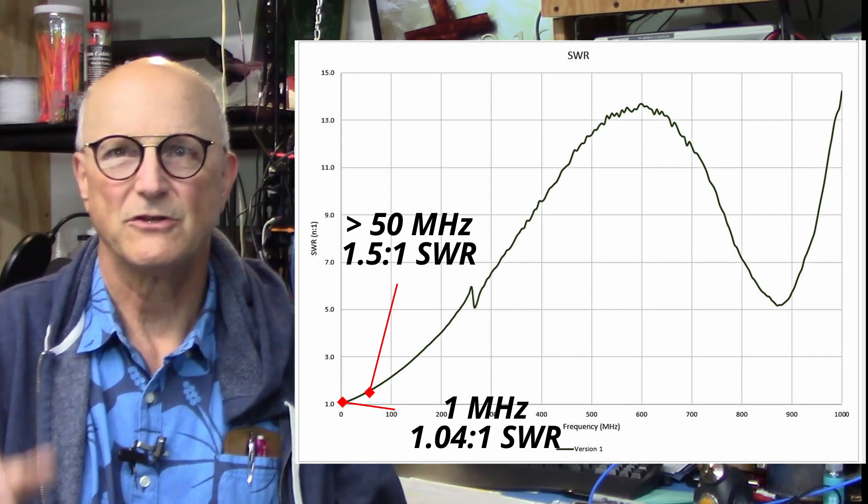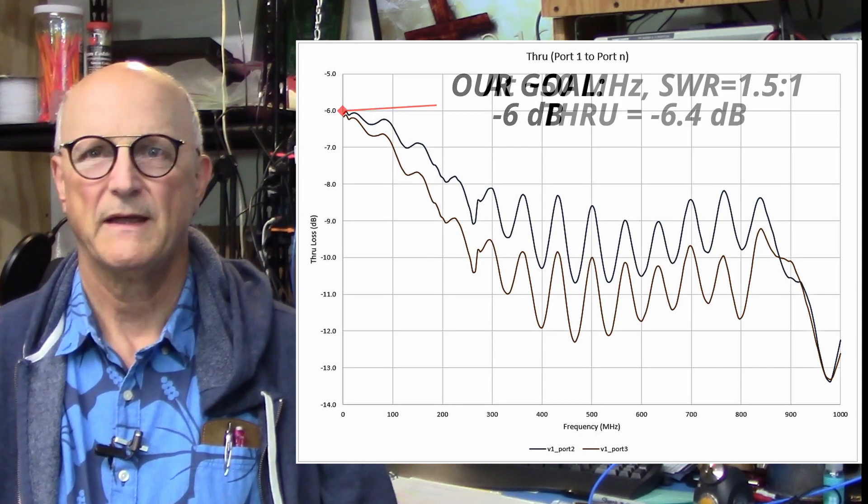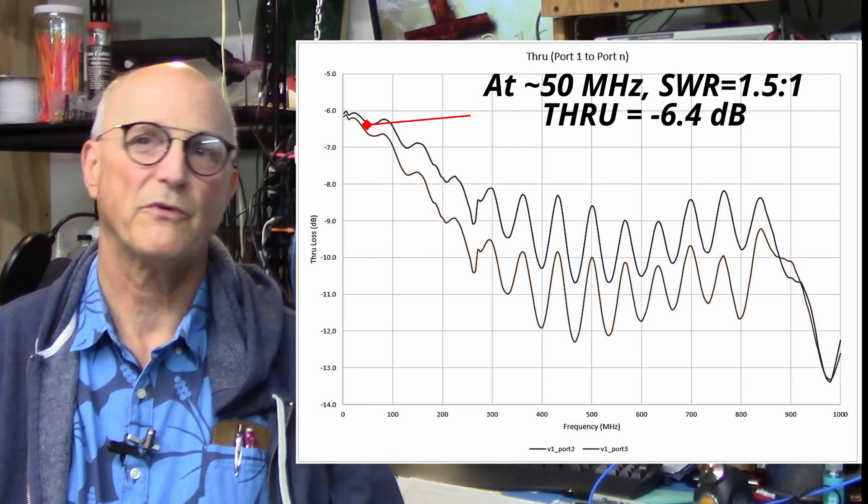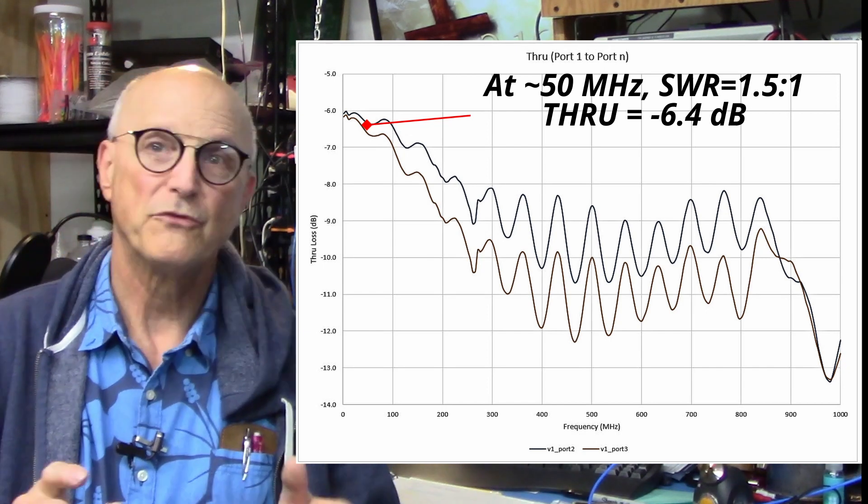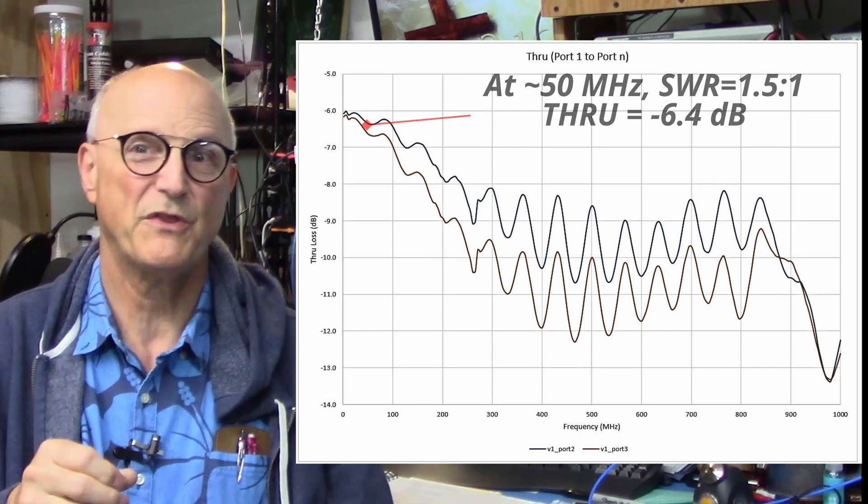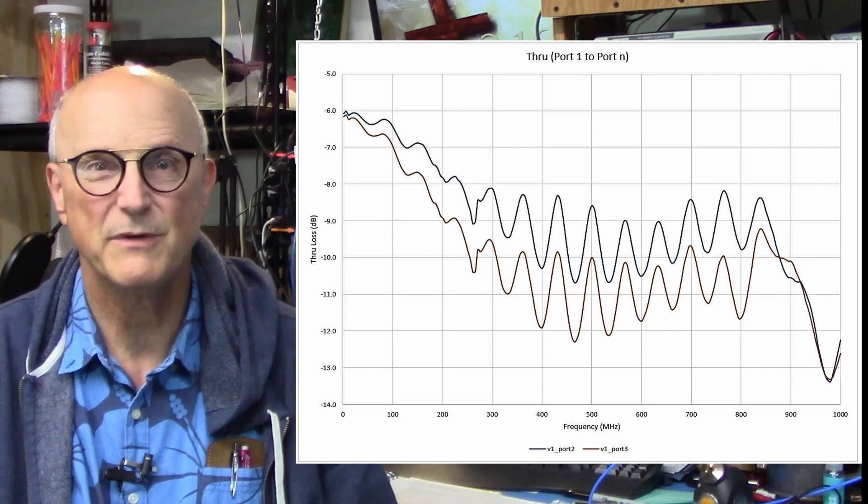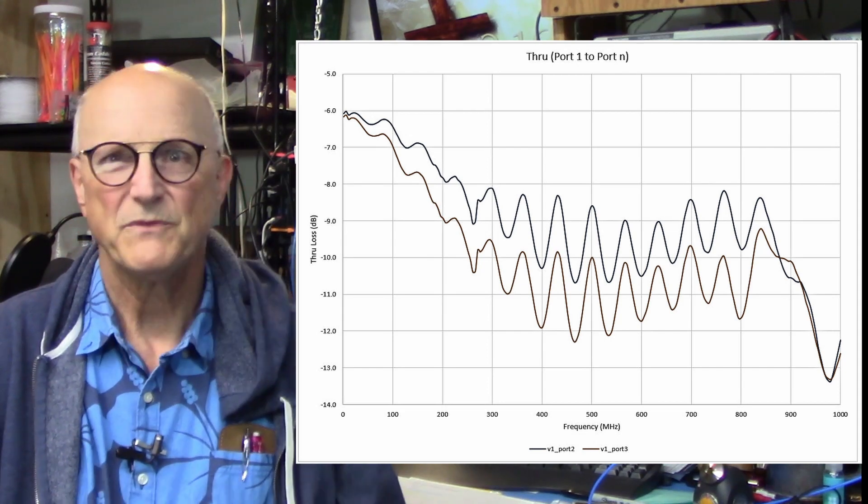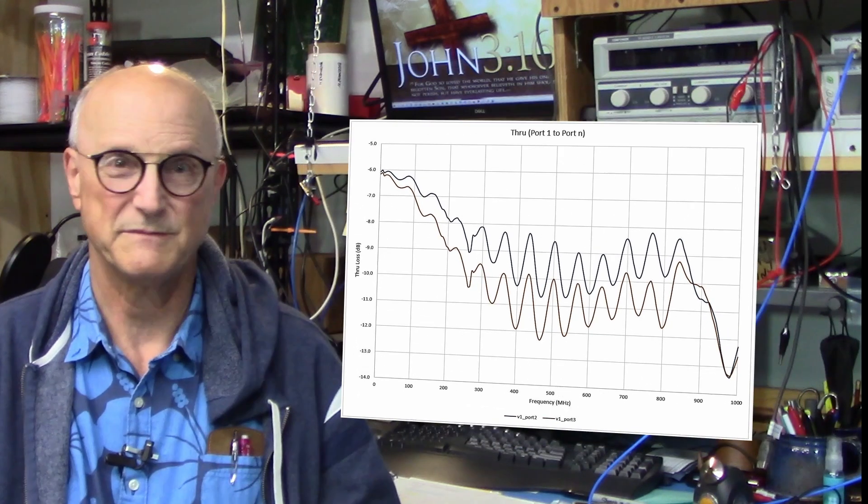And the SWR doesn't crest over 1.5 to 1 until we get to over 50 megahertz. Now, let's take a look at the through performance. Our goal is minus 6 dB. Now, at the same place that we crested over 1.5 to 1 SWR, the through is minus 6.4 dB, which is within seven percent of our goal of minus 6 dB.